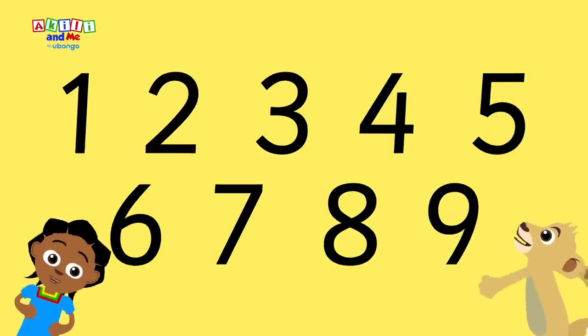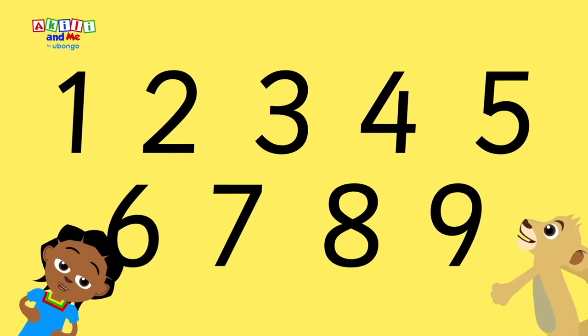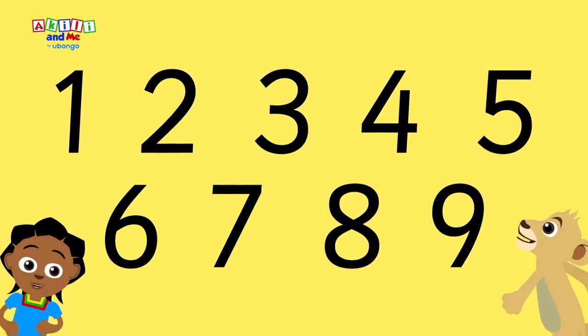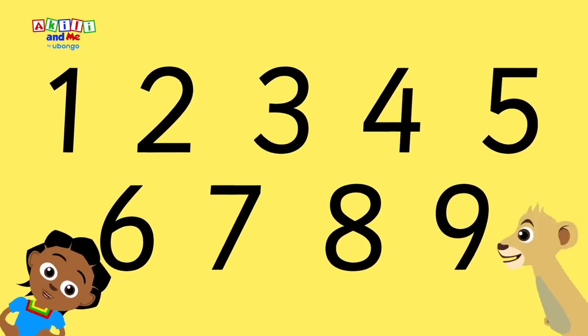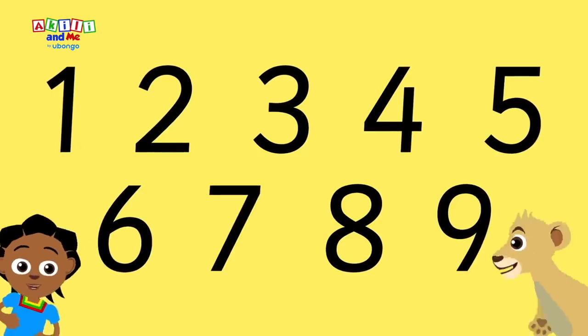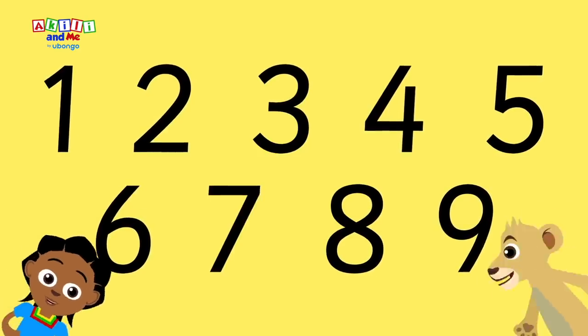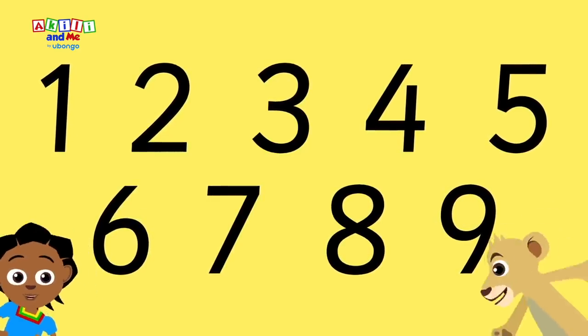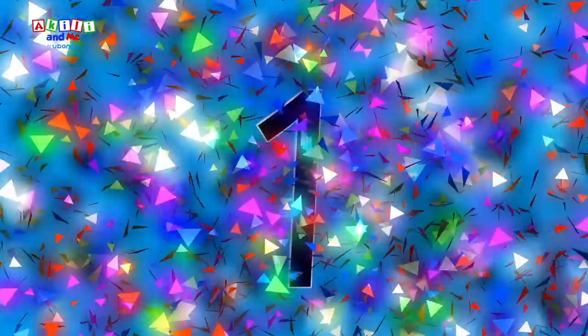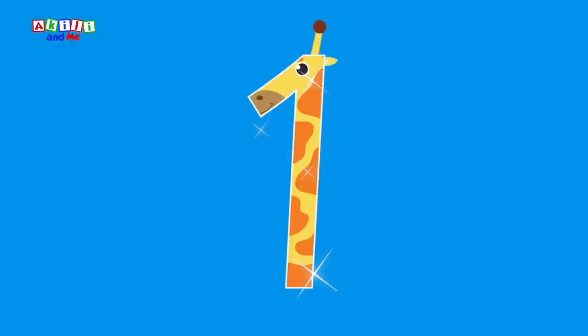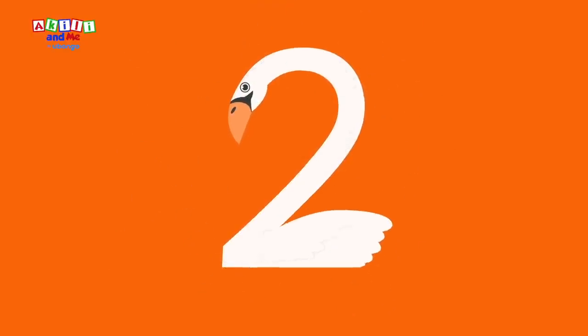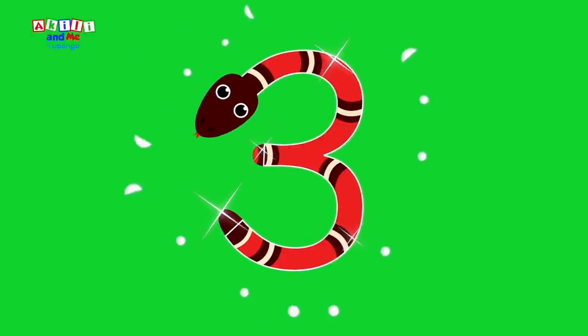Kids, let's count the numbers one to nine. Listen to the number and see what the number looks like. Number one, like a giraffe. Number two, like a swan. Number three, like a snake.